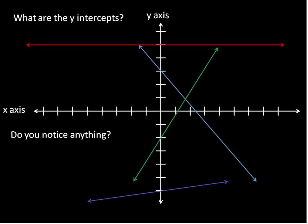Let's take a look here and find some y-intercepts. While we're looking through these, try and notice anything similar about the points where these lines cross the y-axis. We'll start with the blue line this time. It's at 0 on the x-axis and 1, 2, 3 on our y-axis, so that would be the point (0, 3). Now the red line — that's the point (0, 5), counting up 1, 2, 3, 4, 5.